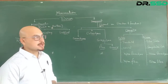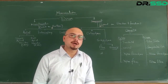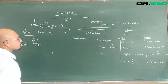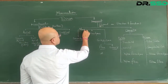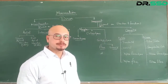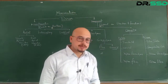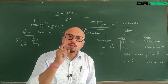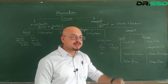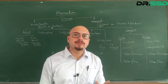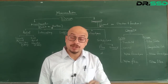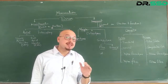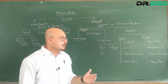Permanent tissues are fully differentiated and hence they have a unique function to perform. Based on structure and functions, permanent tissues are broadly of two types: simple permanent tissue and complex permanent tissue. Simple permanent tissue is homogeneous — made up of only one type of cell. Whereas complex tissue is heterogeneous — two or more different types of simple tissue combine together to form a complex tissue.